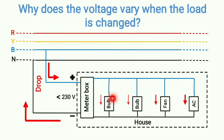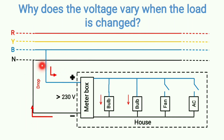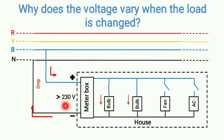Now suppose the power consumption is reduced — two loads are disconnected. The drop is reduced because now only the two bulbs are drawing current and they don't draw as high a value of current. As a result, the current in the service main also reduces, the voltage drop reduces, and accordingly the voltage at the consumer end will be higher. Again, if this voltage change is within plus or minus six percent, it is okay; if it exceeds the limit, you need to perform voltage control.